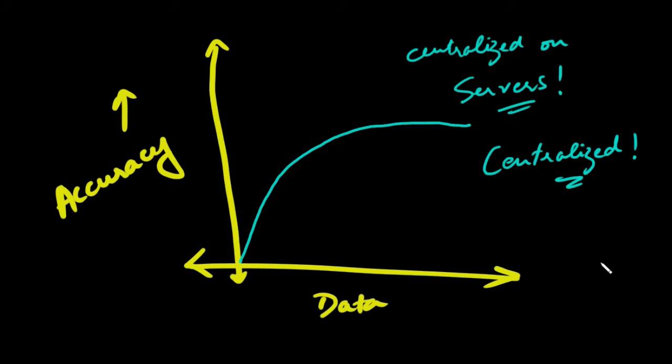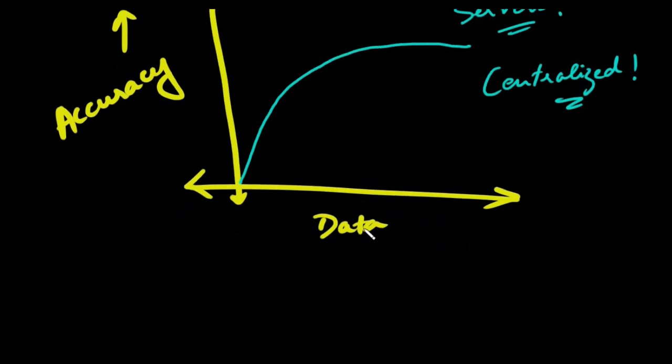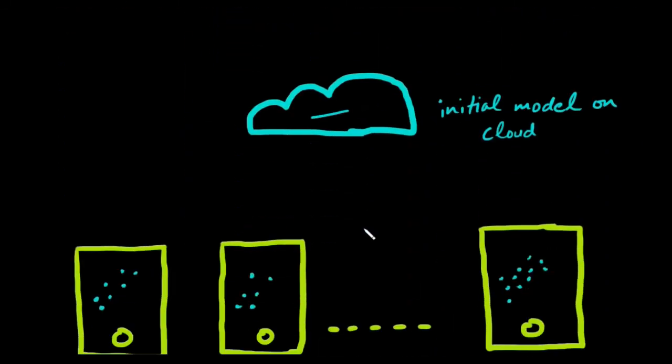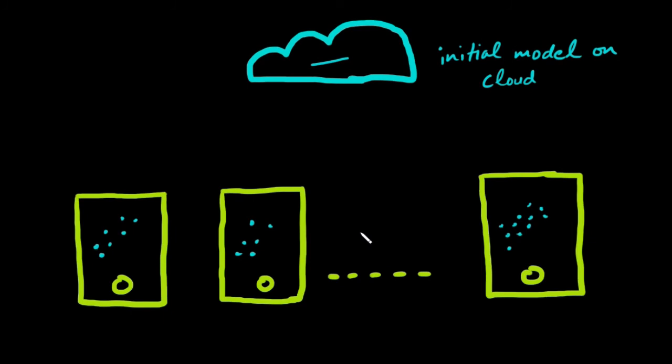What federated learning does is this. Instead of migrating your data onto one of their servers, they will migrate a machine learning model onto your device when it is not being used, probably when you keep it to recharge at night while you go to sleep. It works something like this.